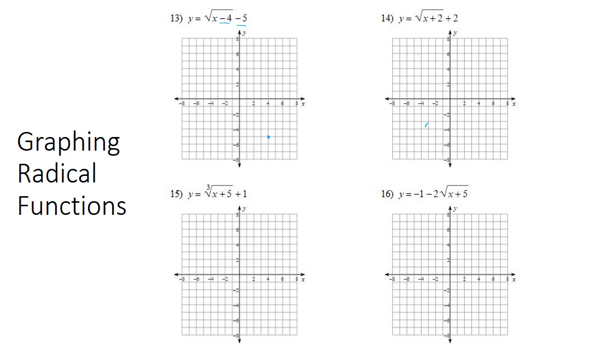And then we'll check to see if there's a dilation. So in front of the radical, there's not a number, so it's not dilated. So that means I'm going to go to the right one and up one for my first point and draw a curve through that point. And then we're done.